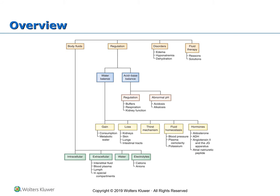This slide provides an overview of the current lecture, which will cover body fluids including separate compartments such as intracellular and extracellular — made out of interstitial fluid, blood plasma, lymph, and other special compartments — as well as water and electrolytes. We will also cover regulation of body fluids including water balance, acid-base balance, regulation and disorders, types of abnormal pH, and fluid therapy.